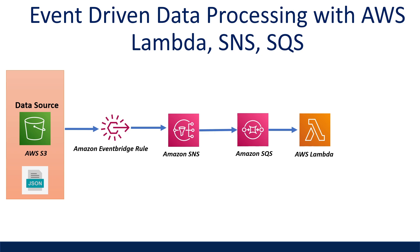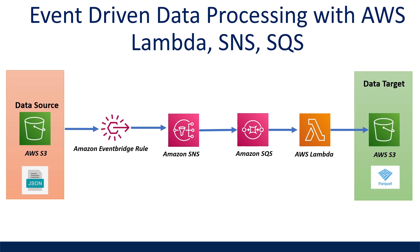Some of you might be thinking: I understand why we need an SQS queue to keep track of all the files we need to process, but why do we need an SNS topic? Well, this allows for other subscribers in the future, like another SQS queue to connect to our event — if another team wants to build another data pipeline to process the same data source. Finally, we would write the transformed data to our target. For this demo, it's another AWS S3 bucket with the file format being Parquet. The Lambda function will perform the required transformations, most likely written in Python. One Python library that can be really helpful for reading and writing data in your Lambda functions is the AWS Data Wrangler library.